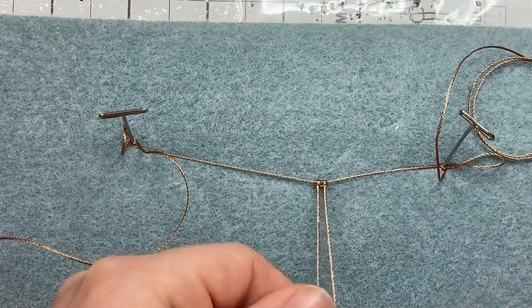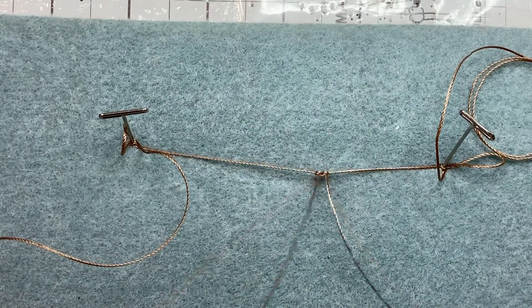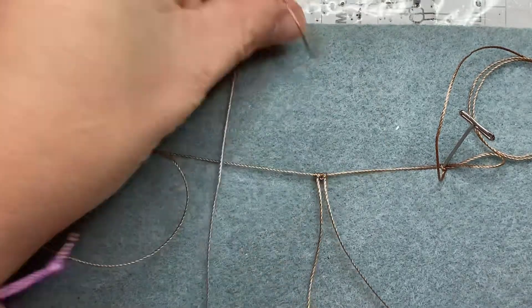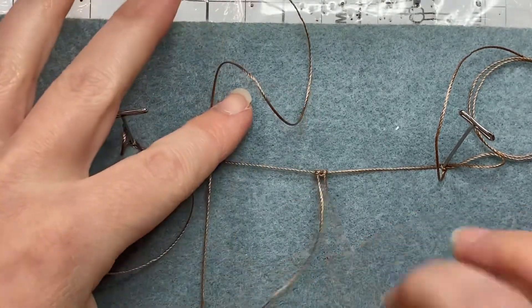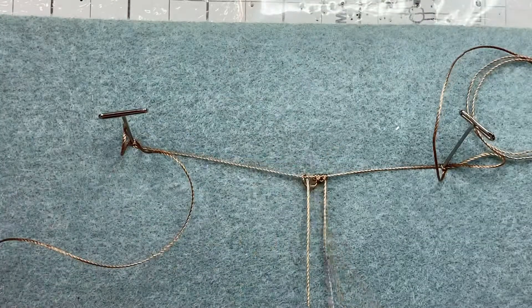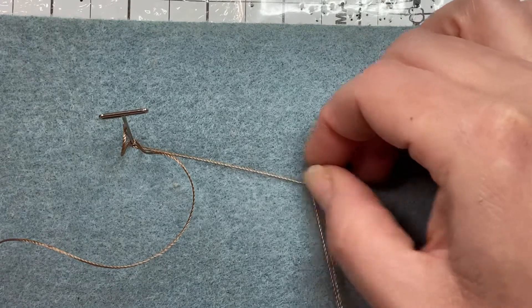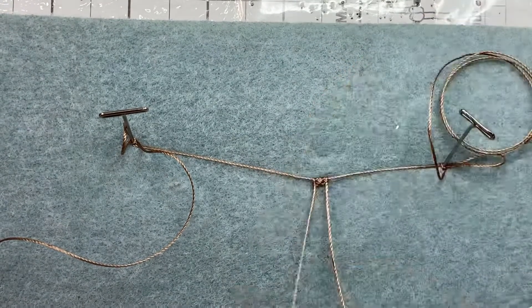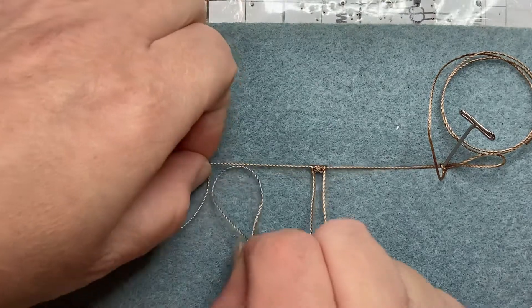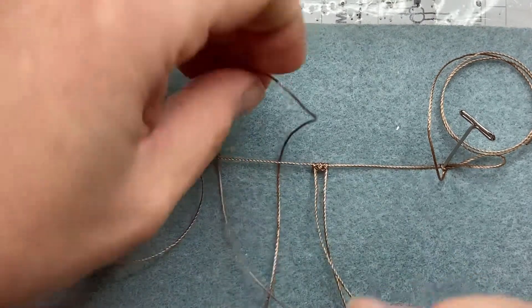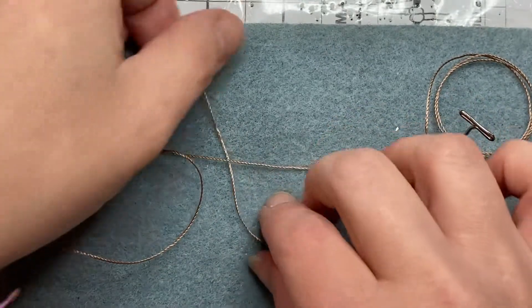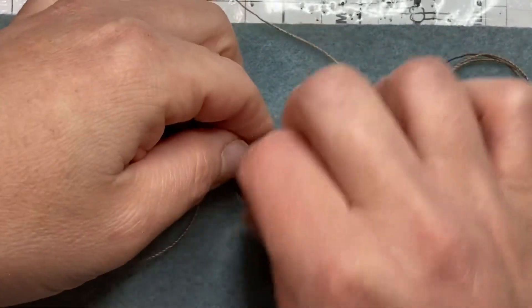So let's do it now on the left hand side. So you're going to go over and pull through. Pull to tighten. And now you're going to go underneath.